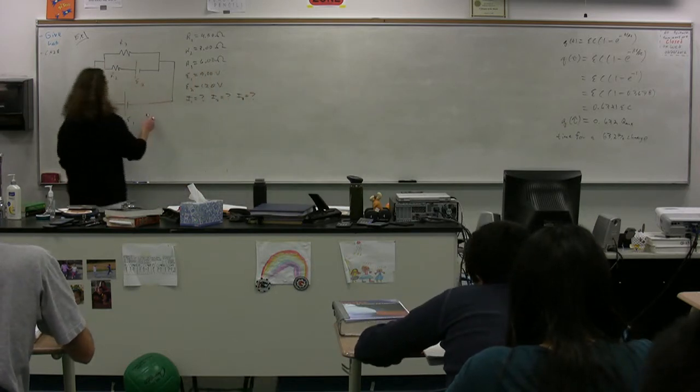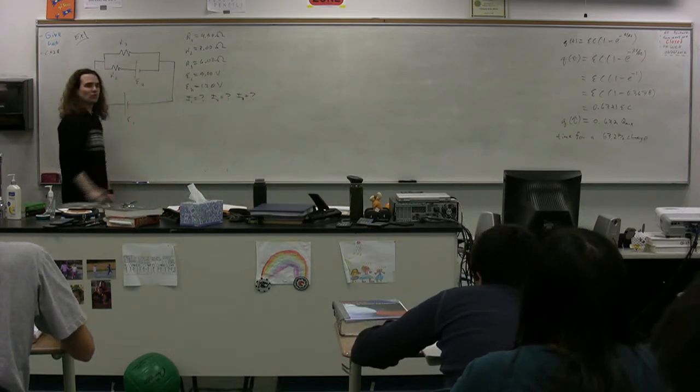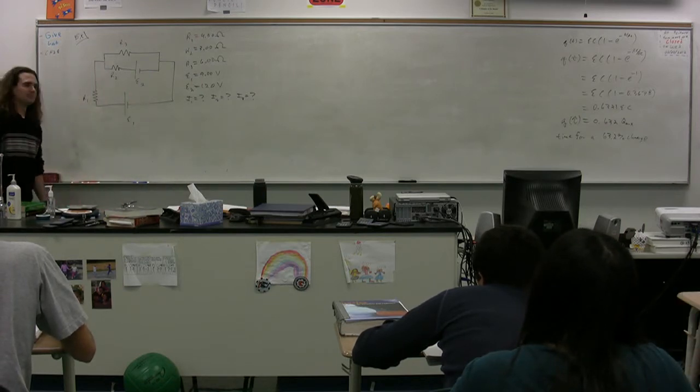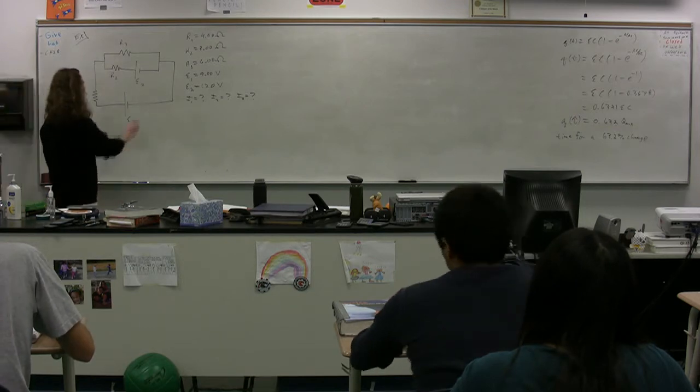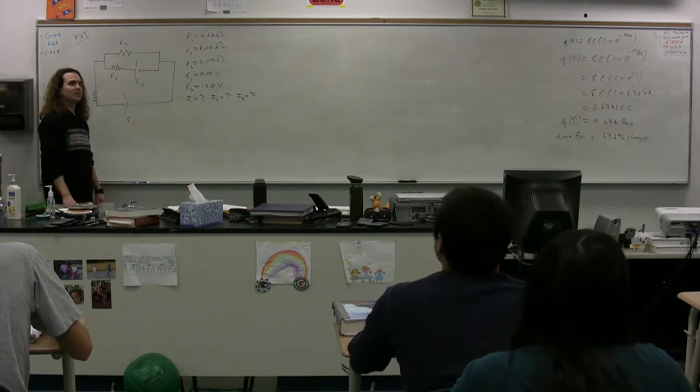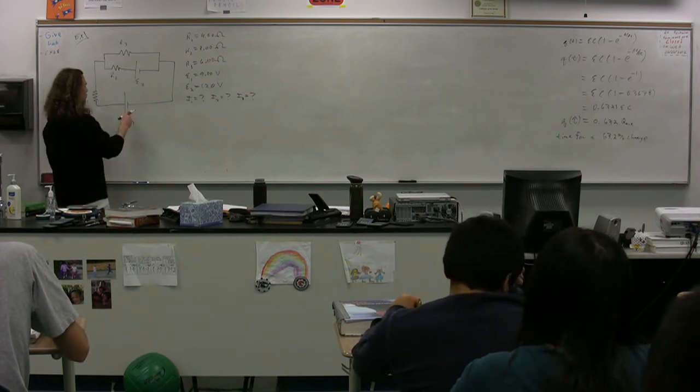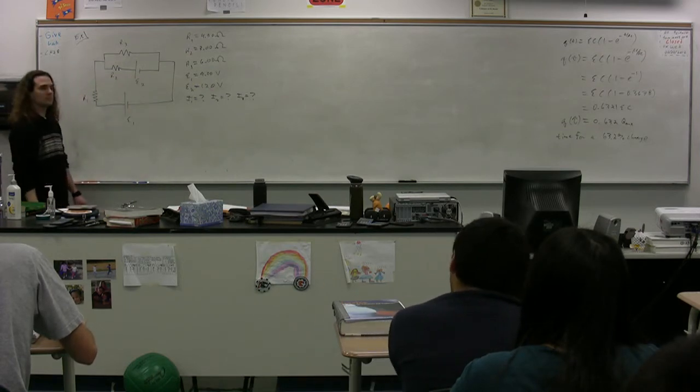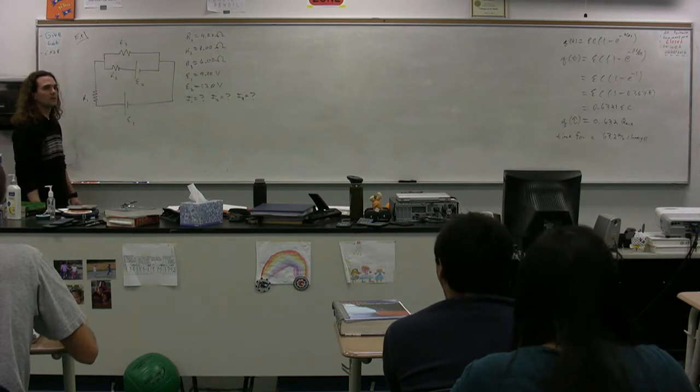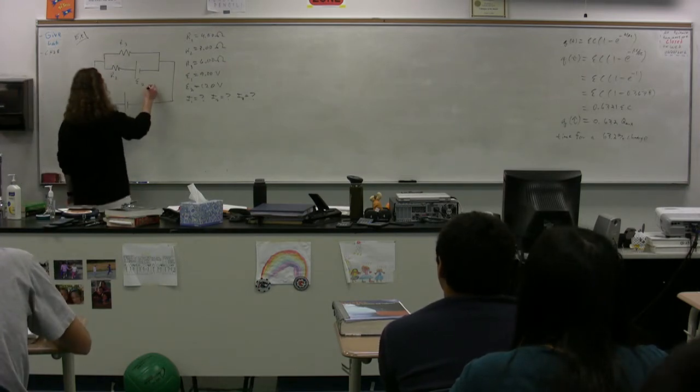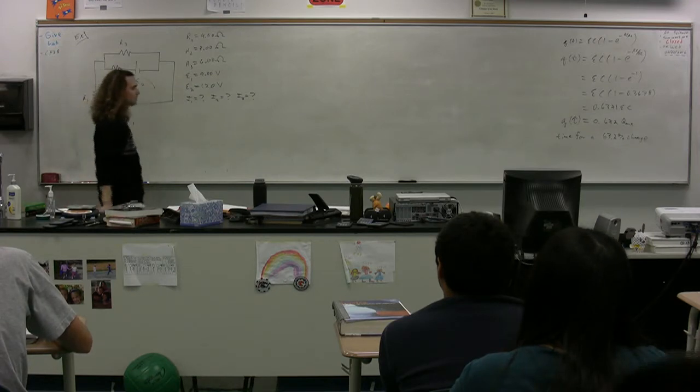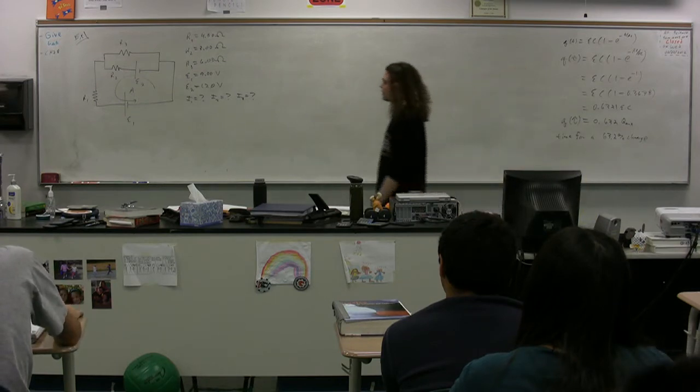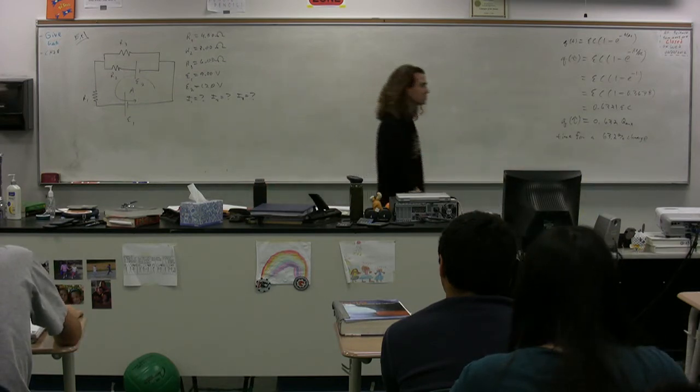Let's say we have a loop down here. Which direction would you like this loop to be and why? Out of the board or into the board? The loop that's going to go through EMF 1, resistor 1, resistor 2, and EMF 2. Out of the board. We'll call this loop A. Why did you pick out of the board? Just because EMF 2 is greater than EMF 1. I'll accept that. That seems like a logical choice.